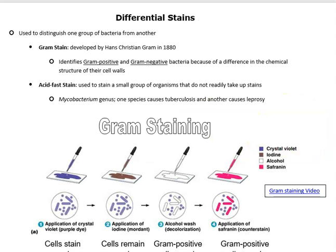Differential stains are used to distinguish one group of bacteria from another. First we have Gram staining, which was developed by Hans Christian Gram in 1880. This stain will identify either Gram positive or Gram negative bacteria because they have a difference in their chemical structure in their cell wall. Acid-fast stains are used to stain a small group of organisms that don't readily uptake stains. The Mycobacterium genus, for example, includes one species that causes tuberculosis and another that causes leprosy — these require acid-fast stains.